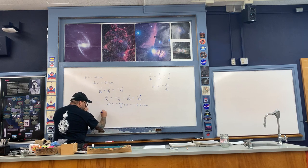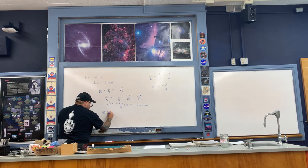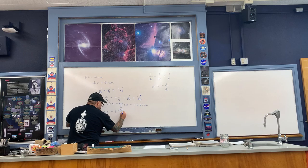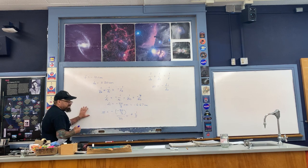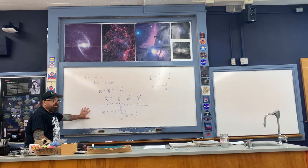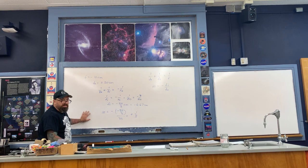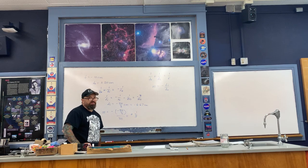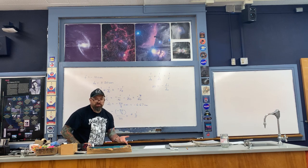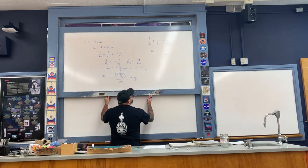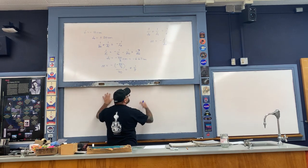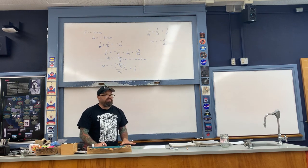The magnification is negative DI over DO, which comes out to positive one-third. So you end up with an upright virtual image that is small compared to the object. This is also demonstrated in the lenses demonstration video. This is the only type of ray diagram for this situation.